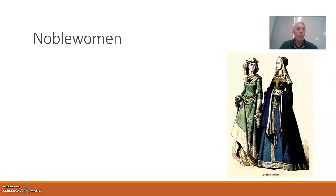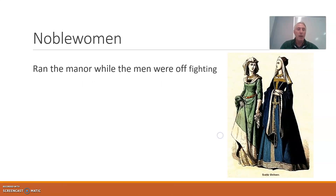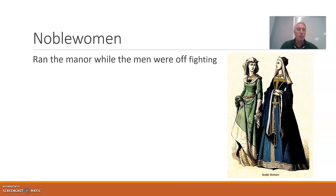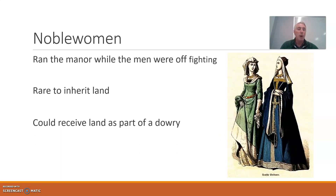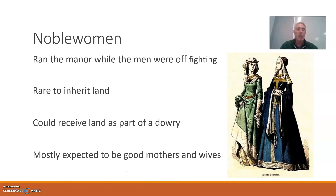Noble women in medieval Europe played an active role in this warrior society because the men were constantly off fighting. The lady of the house often ran the manor while her husband or father was away on a military campaign. She supervised vassals, managed the household staff, and made sure everything ran properly. That being said, her ability to inherit land and property was restricted — land typically passed to the oldest son in each family. She could, though, receive land as part of a dowry, a gift given by the father of the bride at the wedding. This made daughters of noblemen a highly valued prize among the nobility. Overall, they were expected to be mothers and wives, have many children, and be dutiful to their husbands.